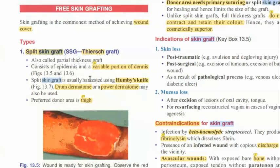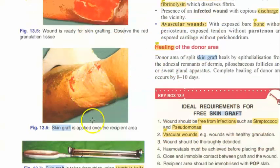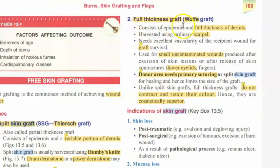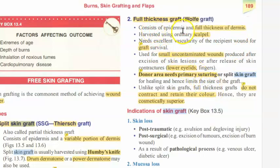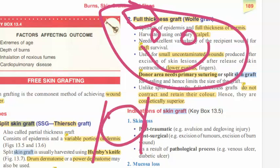Split skin graft is not cosmetically appealing, but it is mostly done on areas like the leg — not the face. It is used to cover healthy wounds or ulcers. The full thickness graft, also called a Wolfe graft, takes the full thickness of the dermis along with the epidermis. This is done when very good cosmetic appeal is needed, such as on the face. However, the donor site cannot donate repeatedly and heals more slowly.